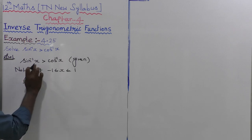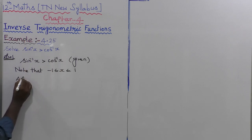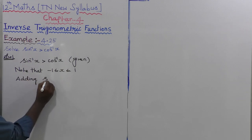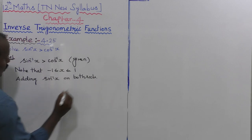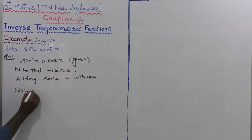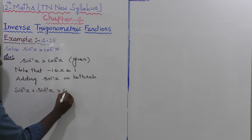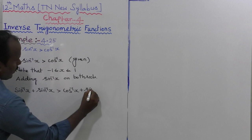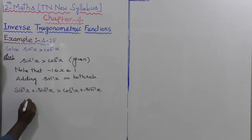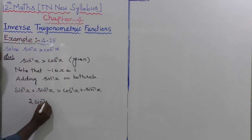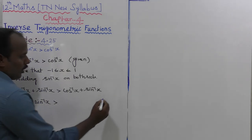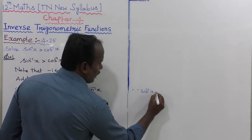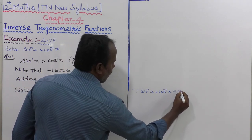Adding sin⁻¹(x) on both sides of the inequality: sin⁻¹(x) + sin⁻¹(x) > cos⁻¹(x) + sin⁻¹(x). This gives 2·sin⁻¹(x) > sin⁻¹(x) + cos⁻¹(x). Now, sin⁻¹(x) + cos⁻¹(x) = π/2, which is the standard formula.